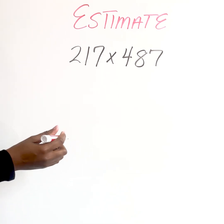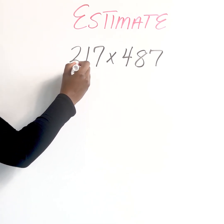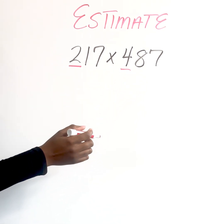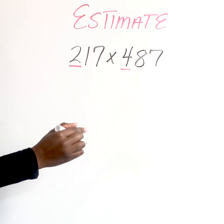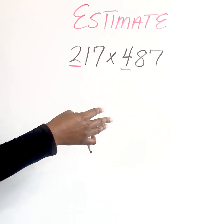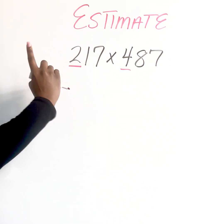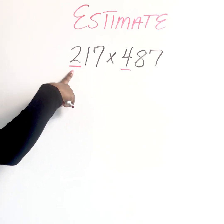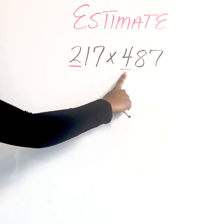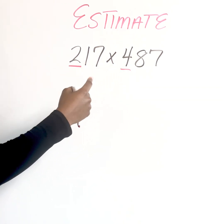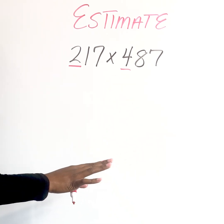So front end estimation means that we're going to look at our leading value. So whatever number is first, and that's going to determine the place to which we round. So you see how rounding still transitions into this new skill estimate because you will have to know that two is in the hundredth place and four is in the hundredth place. So that means that both of these need to be rounded to the nearest hundred before we do the math.